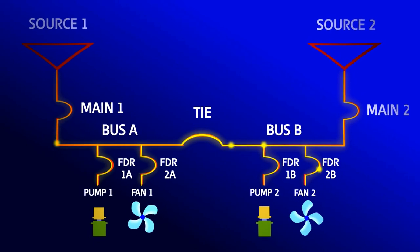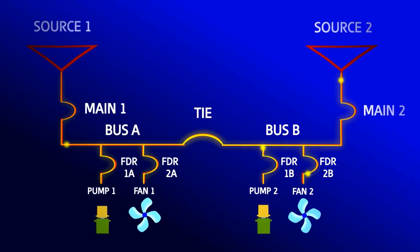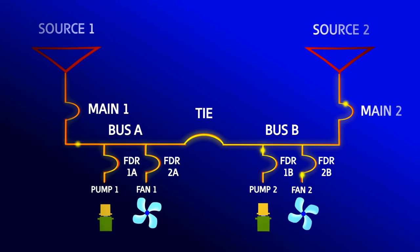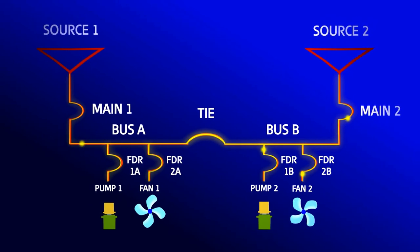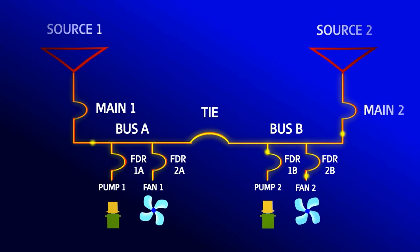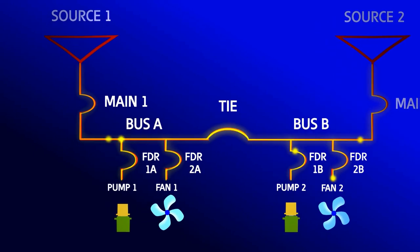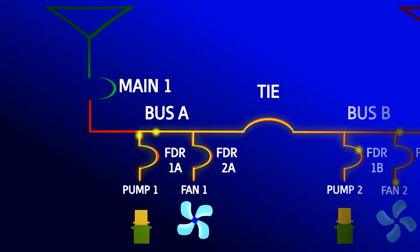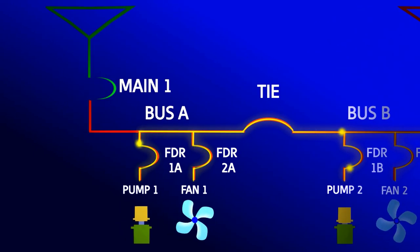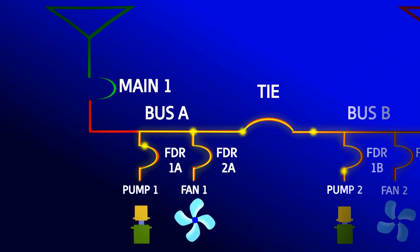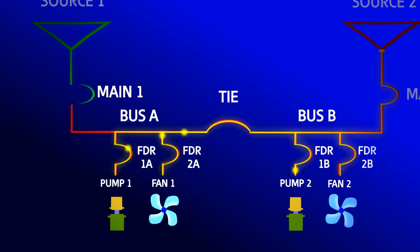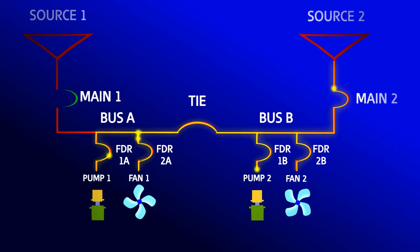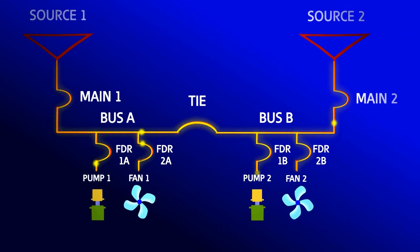In the case where the tiebreaker is closed during normal operation, both sources of power are running in parallel. When you lose one source, the other source automatically assumes all of the load. When the lost source returns, the sources are paralleled using synchronizing control.